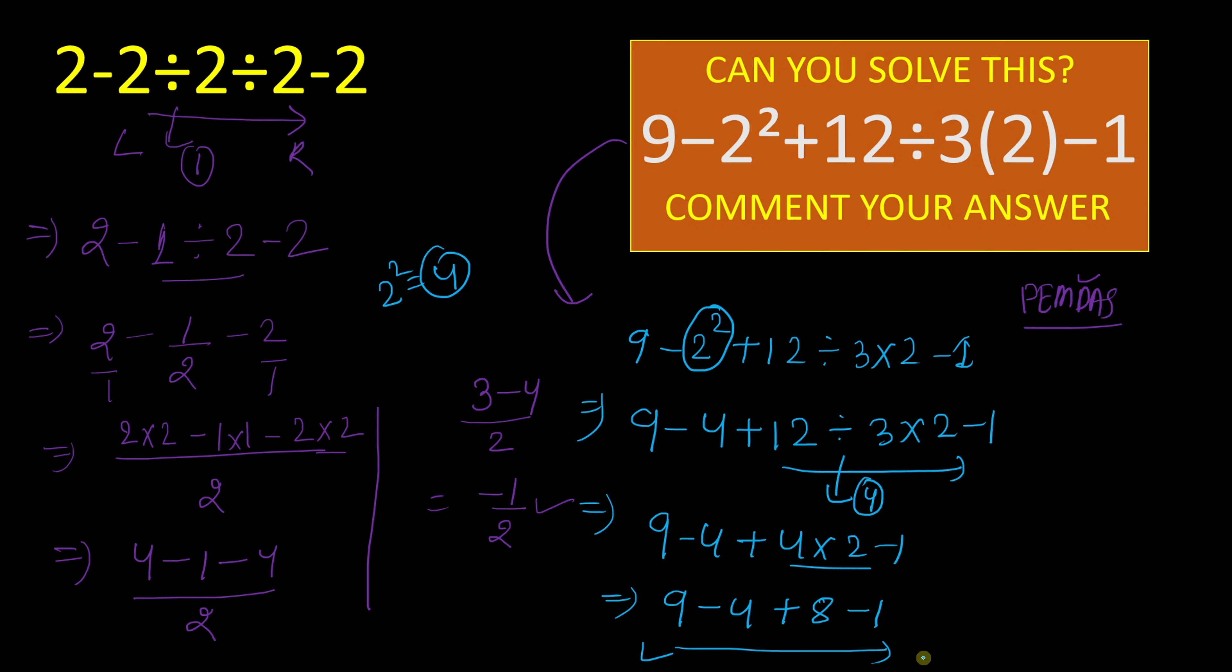Now we will go for left to right because addition subtraction have the same priority. 9 minus 4 that will give result 5 plus 8 minus 1. 5 plus 8 will give result 13 minus 1, and 13 minus 1 will give result 12 as the right answer.